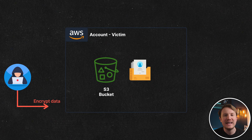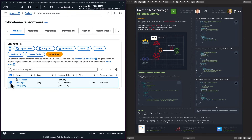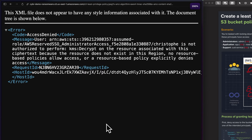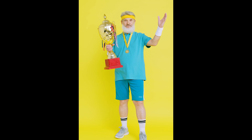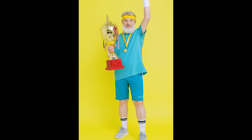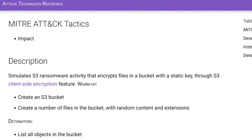There's a new ransomware attack being used in AWS that you need to know about. We're going to cover everything from what it is and how it works, to doing a live demonstration. We'll also talk about defenses to prevent this attack, and I'll save the best for last — I'll show you a couple of tools you can use to test whether your environments are vulnerable.